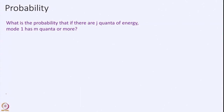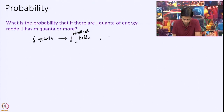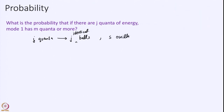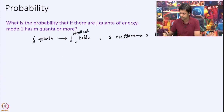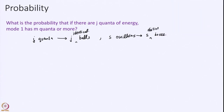We have to get back to permutations and combinations to calculate this probability. We are looking at j quanta as essentially j identical balls — all quanta are identical; we cannot distinguish between two different quanta of energy. S oscillators represent s distinct boxes. So the problem is putting j identical balls in s distinct containers, and we ask: what is the probability that the first mode gets more than m balls?